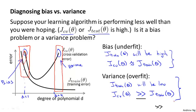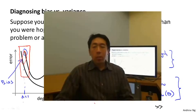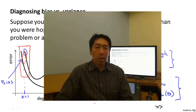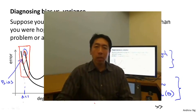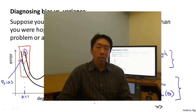The key that distinguishes these two cases is: if you have a high bias problem, your training set error will also be high — your hypothesis is just not fitting the training set well. If you have a high variance problem, your training set error will usually be low — much lower than your cross-validation error. By diagnosing whether a learning algorithm is suffering from high bias or high variance, or a combination of both, that gives us much better guidance for what promising things to try in order to improve the performance of the learning algorithm.